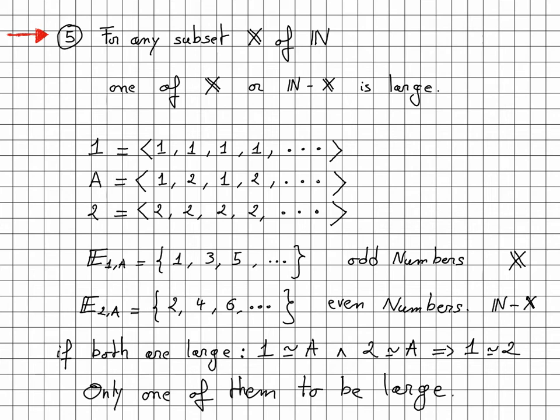Finally, one has an additional constraint, which is the following. For any subset X of the set of natural numbers, one of X or N-X must be large. And we surely cannot have both large.